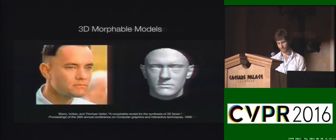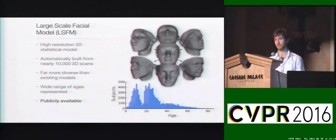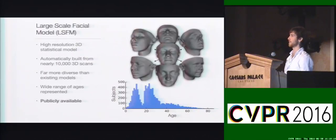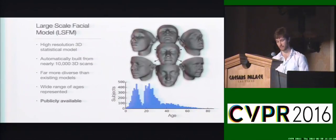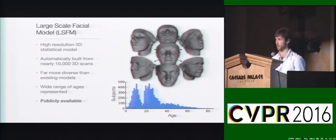In this work we put forward a fully automatic pipeline for morphable model construction and apply this pipeline on a new dataset of nearly 10,000 facial meshes collected by Great Ormond Street Hospital, in order to build a large-scale facial model — the most descriptive morphable model yet built.